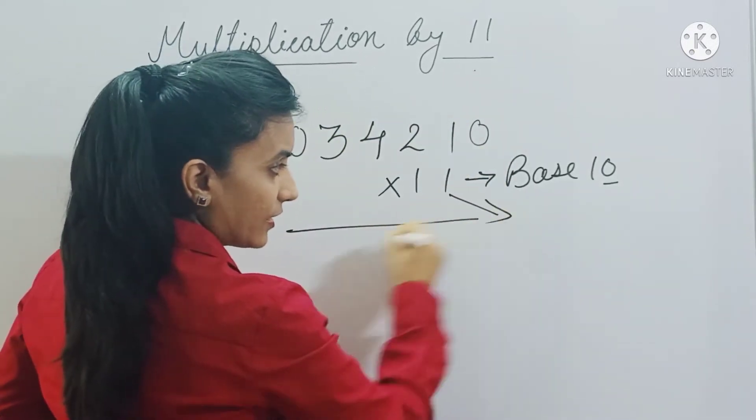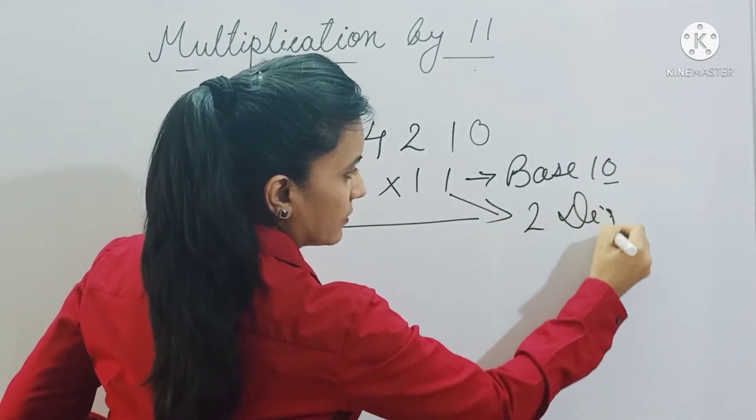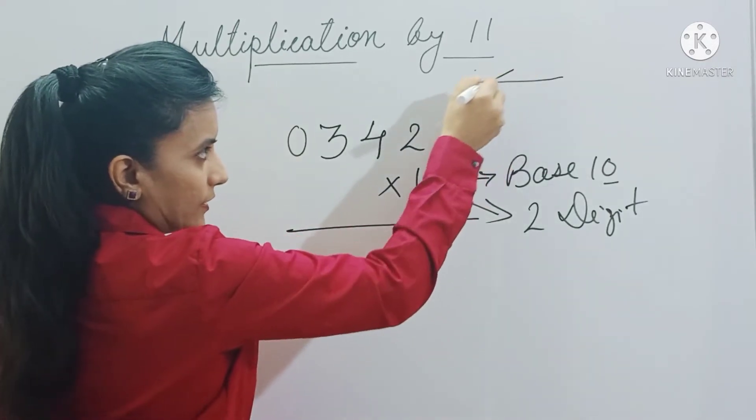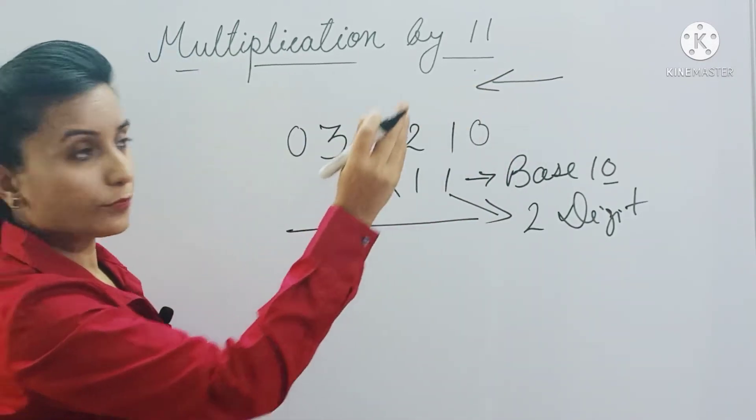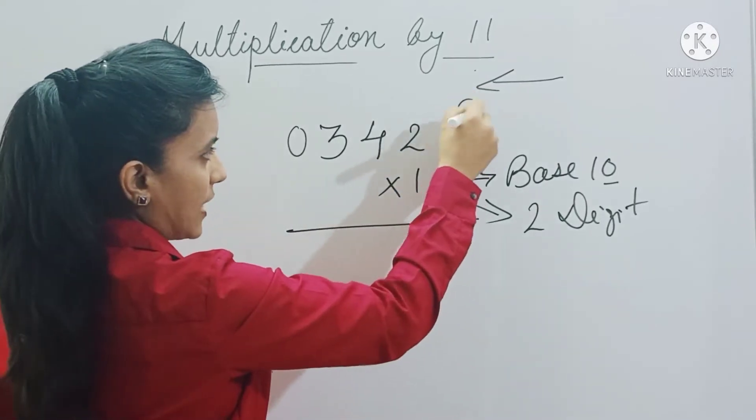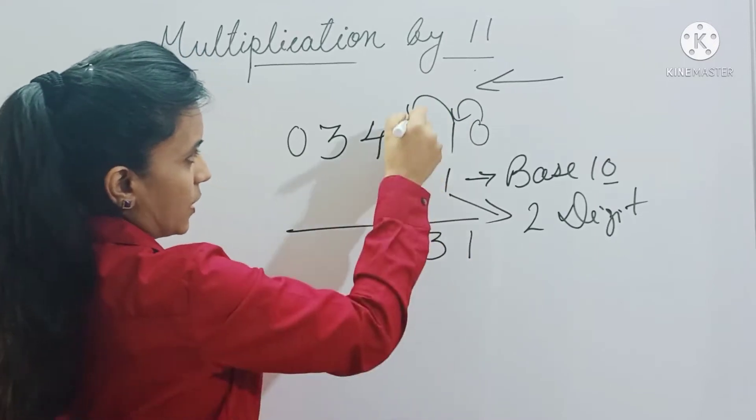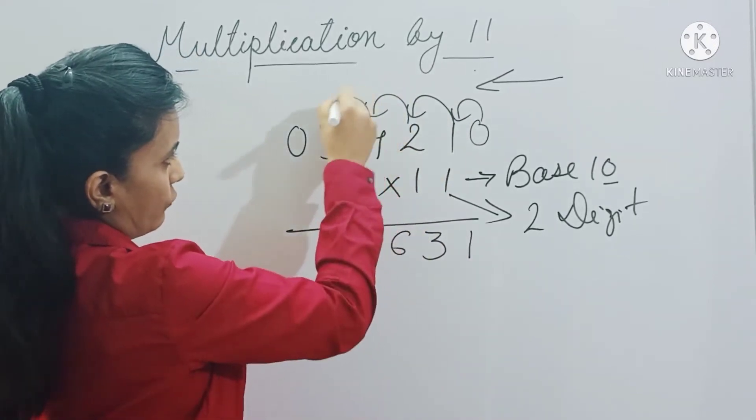And 11 is a two-digit number, so we have to add these numbers starting from right to left in pairs. So let's start adding: 0 plus 1 is 1, 1 plus 2 is 3, 2 plus 4 is 6, 4 plus 3 is 7.